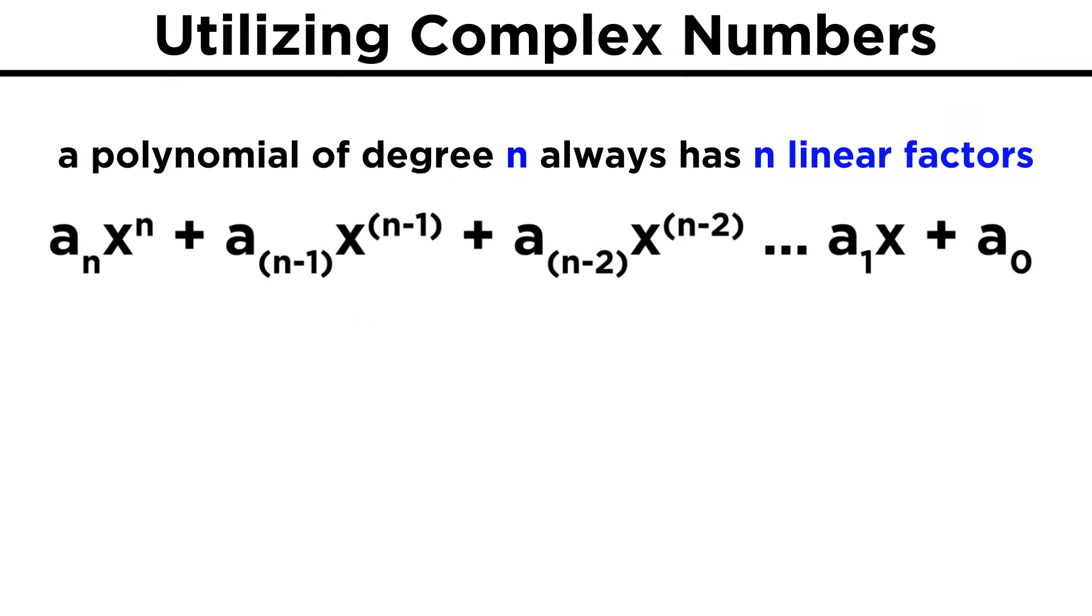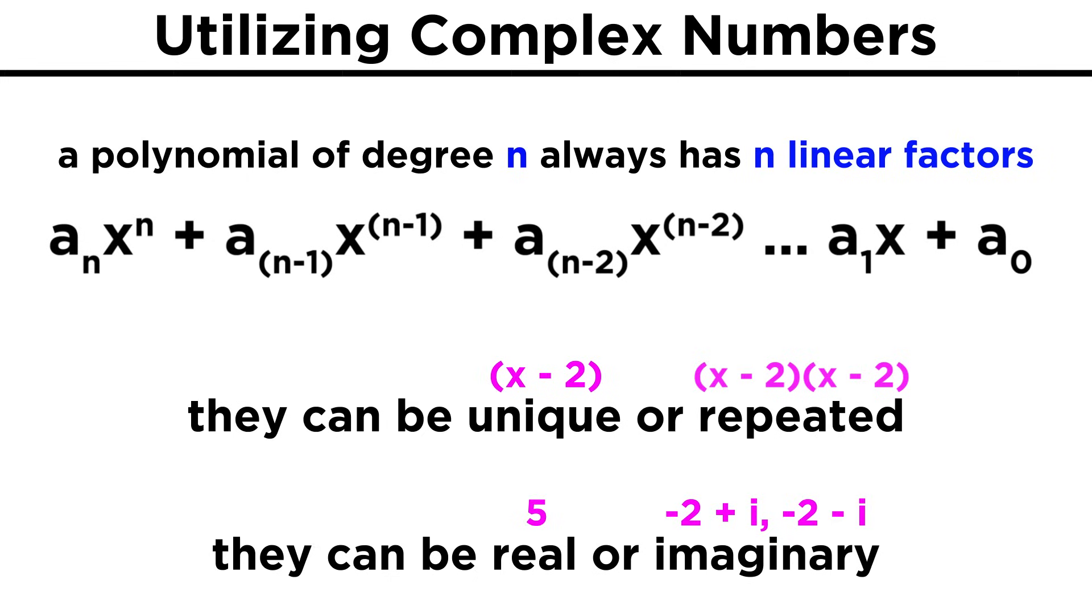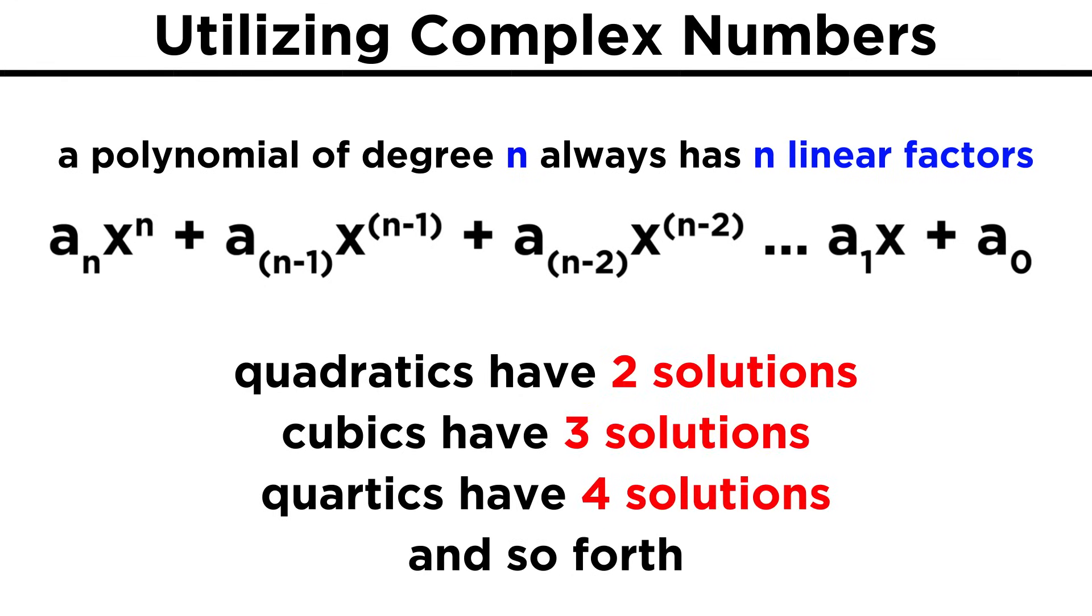In this way, a polynomial of degree n will always have n linear factors. There can be repeats, so they aren't always all unique. They aren't always all real numbers either. Some could be pairs of complex conjugates, as we just saw with the quadratic. But if we take all of these into account, an nth degree polynomial will always have n linear factors.